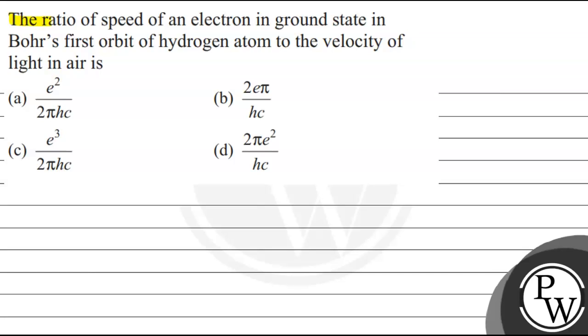Let's read the question. The ratio of speed of an electron in the ground state in Bohr's first orbit of hydrogen atom to the velocity of light in air is: Option a: e²/(2πhc), Option b: 2eπ/(hc), Option c: e³/(2πhc), Option d: 2πe²/(hc).